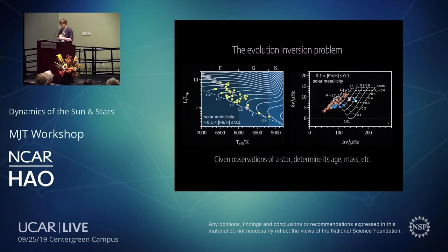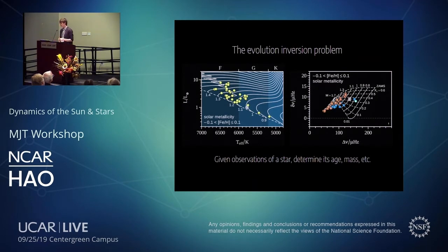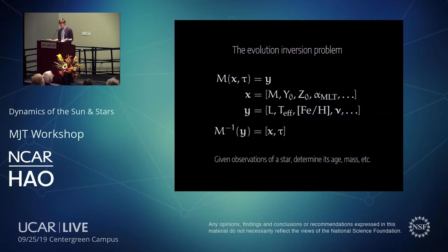On the left is a Hertzsprung-Russell diagram with evolutionary tracks varied in initial mass. Tracks overlap at the same point — if you only had luminosity and temperature, you don't know if the lawn is wet because it rained or if the sprinkler ran. Fortunately, with Kepler solar-type stars, we also have seismic data. The C-D diagram shows how stars evolve in their pulsation properties throughout the main sequence, giving better constraints on age. But as you increase the dimensionality, degeneracies build up.